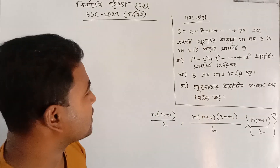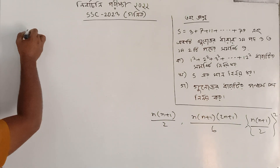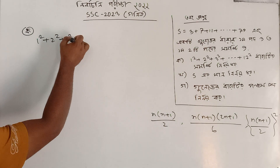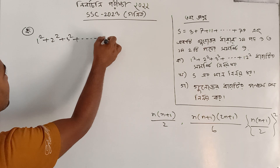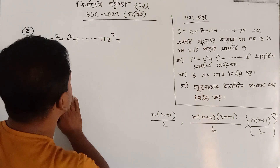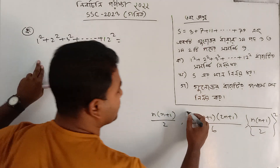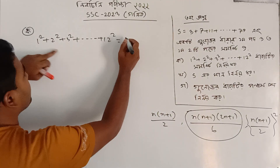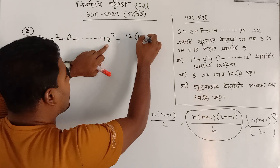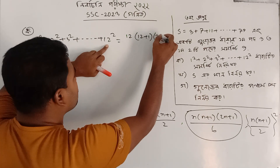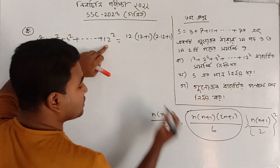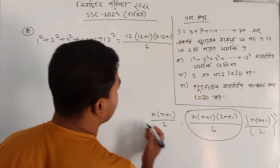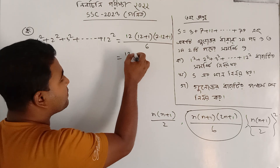So look, the sum is 1 square plus 2 square plus 3 square plus dot dot dot plus 12 square, equal to A square. This is n into n plus 1, because the sum is 1 square plus 2 square equal to A square.